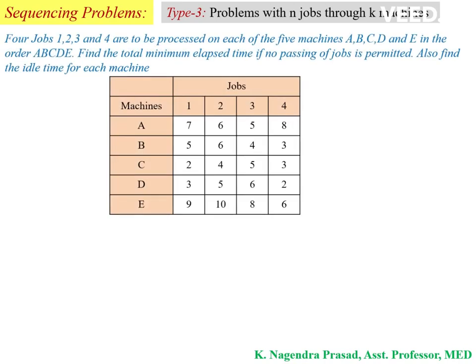4 jobs — 1, 2, 3, 4 — are to be processed on each of the 5 machines A, B, C, D, and E in the order A, B, C, D, E. Find the total minimum elapsed time if no passing of jobs is permitted.